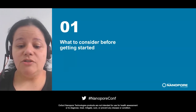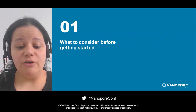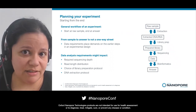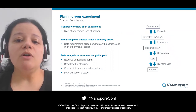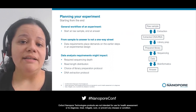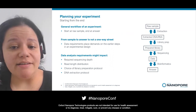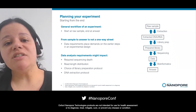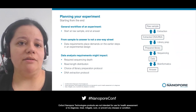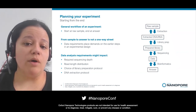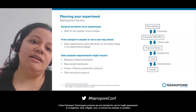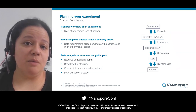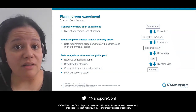There are a few things you need to consider before you get started. When people think about the workflow they think about the raw sample all the way to the answer, but this is actually a two-way street. You need to think about which type of data you need to generate to answer your questions and then work backwards, because the data you need will depend on the library preparation method and on the extraction method as well.